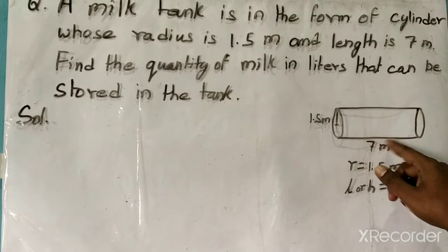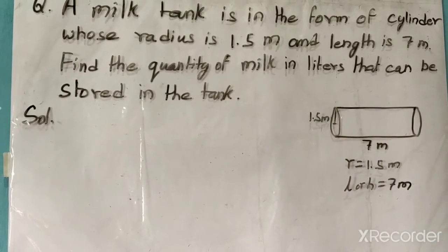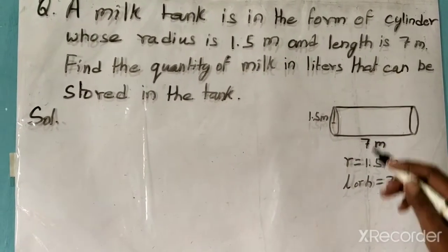7 meters is the length and 1.5 meters is the radius of the cylinder. So first what we will do is we will find the volume of this cylinder. We know that the volume of a cylinder is V equals pi r squared h.